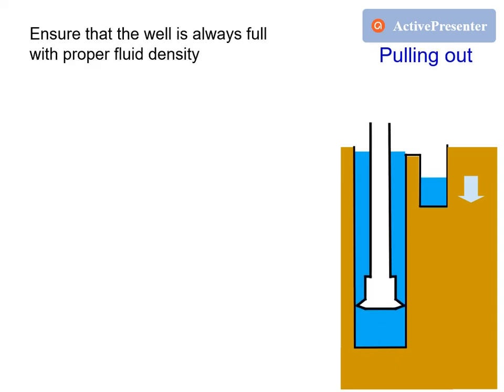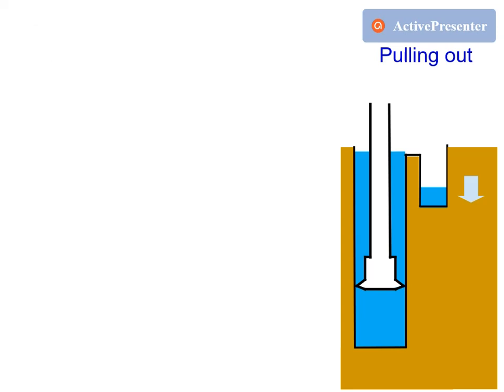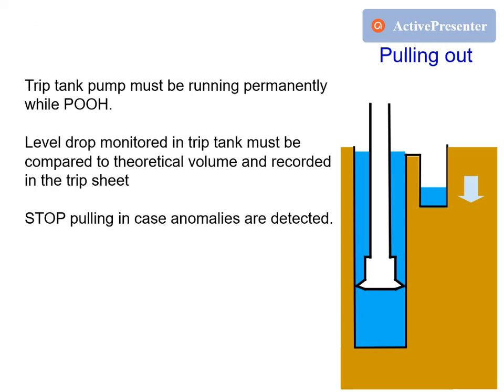Since the bottom hole pressure is decreasing while pulling out, ensure that the well is always full with proper fluid density. The trip tank pump must be running permanently while pulling out of hole, and the level drop monitored in the trip tank must be compared to the theoretical volume and recorded in a proper trip sheet.